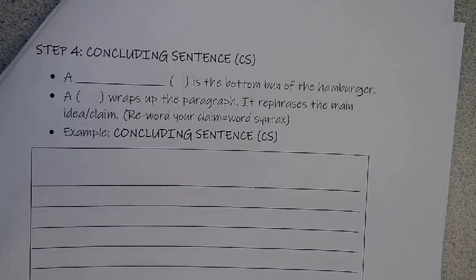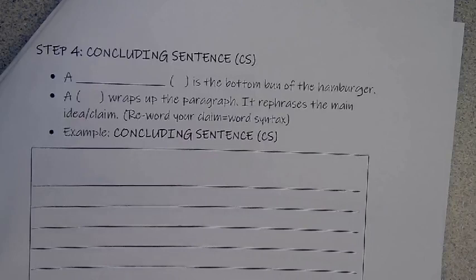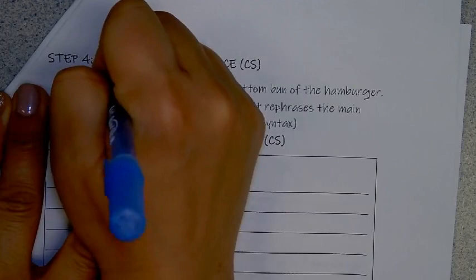Step four, concluding sentence. You're going to need a blue pen for this last step. Our concluding sentence, the CS, is in blue, same color as the topic sentence, but it is the bottom bun of your hamburger.